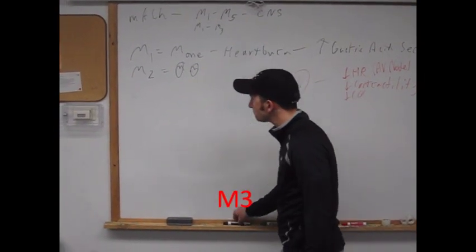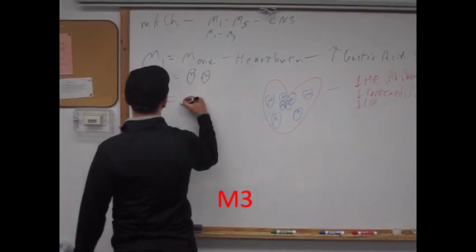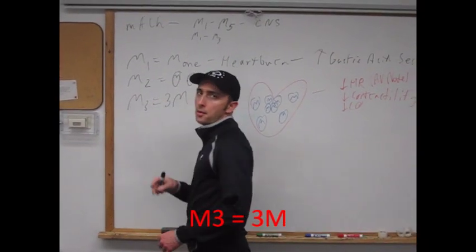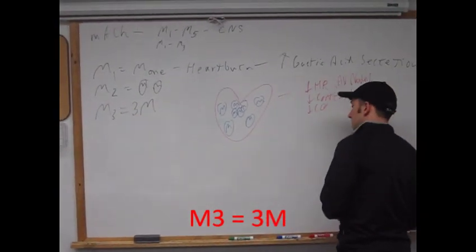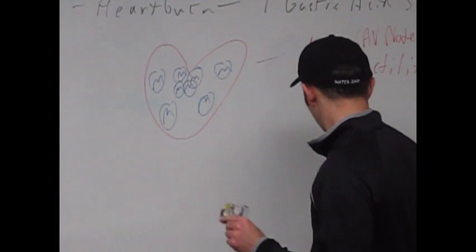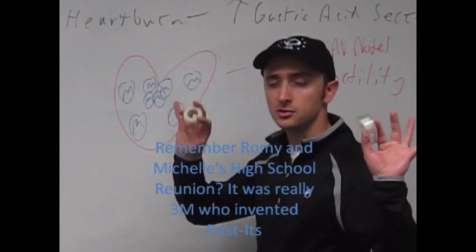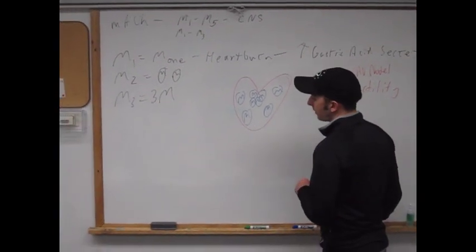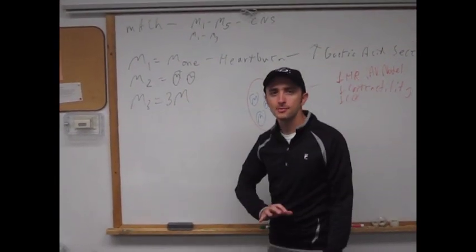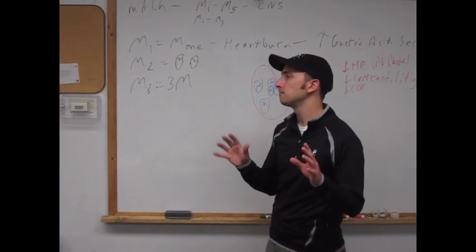Now, M3. I like to think of as 3M, Company 3M. Because what does 3M do? Well, they make scotch tape. They make other medical tapes and post-its and just about anything else you can imagine. They make a whole bunch of stuff. So M3 pretty much does just about anything else you can think of in the parasympathetic nervous system.